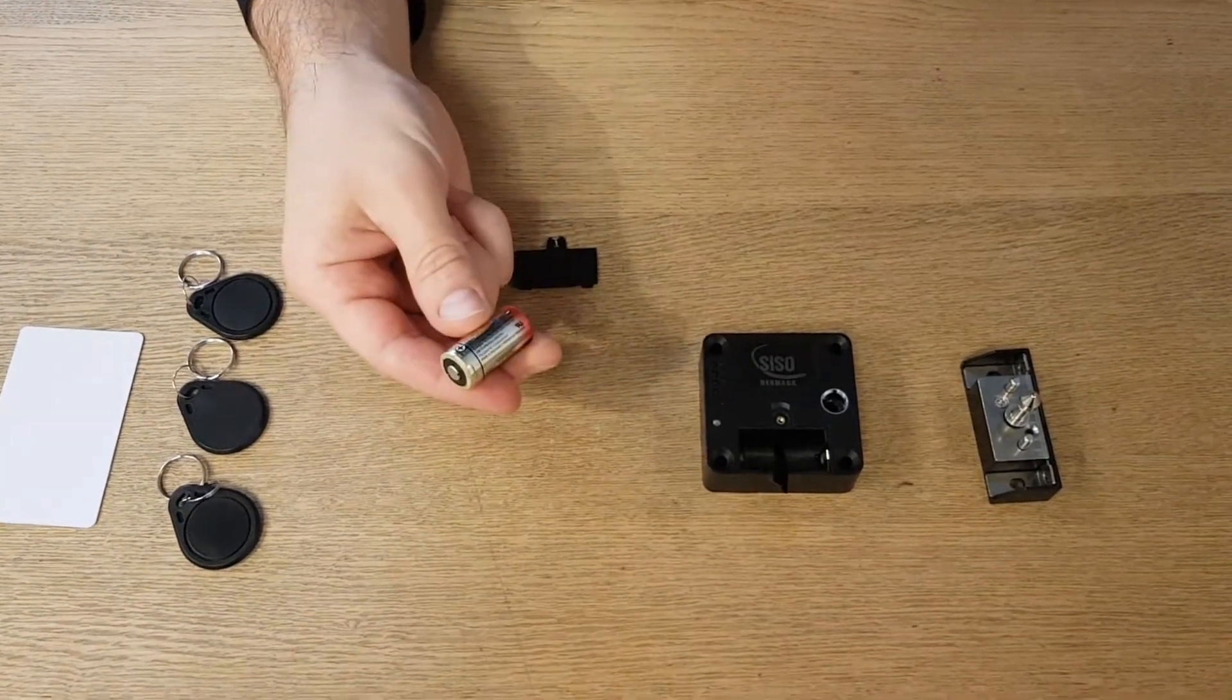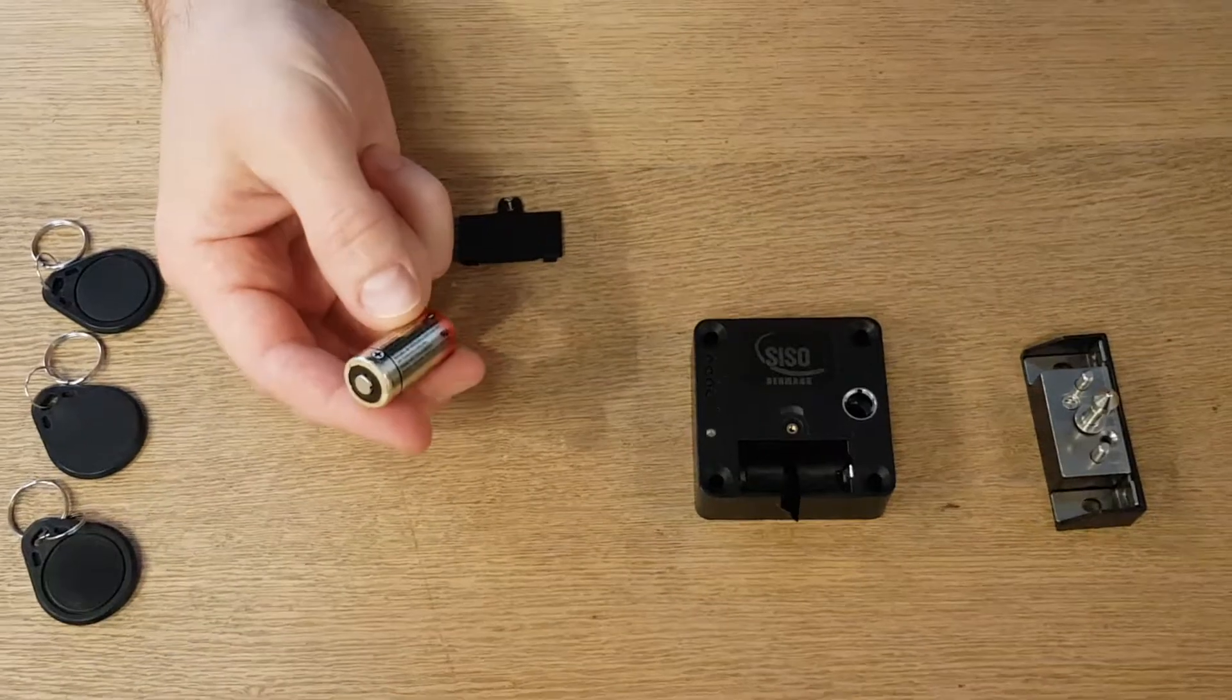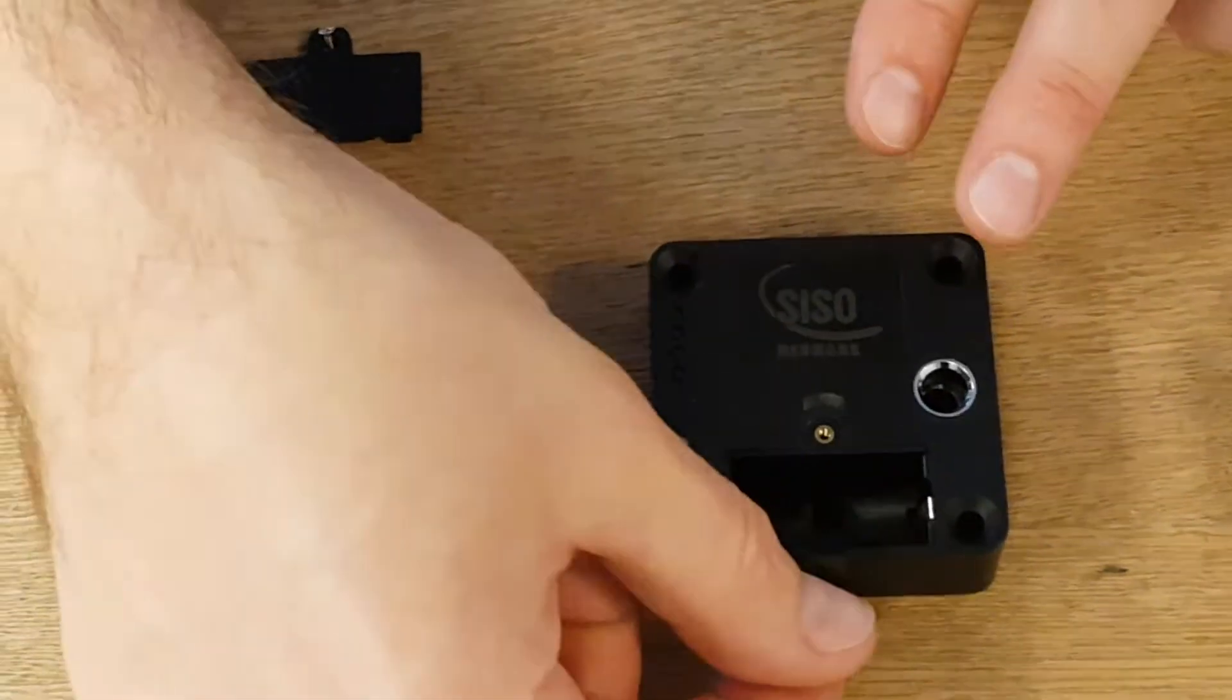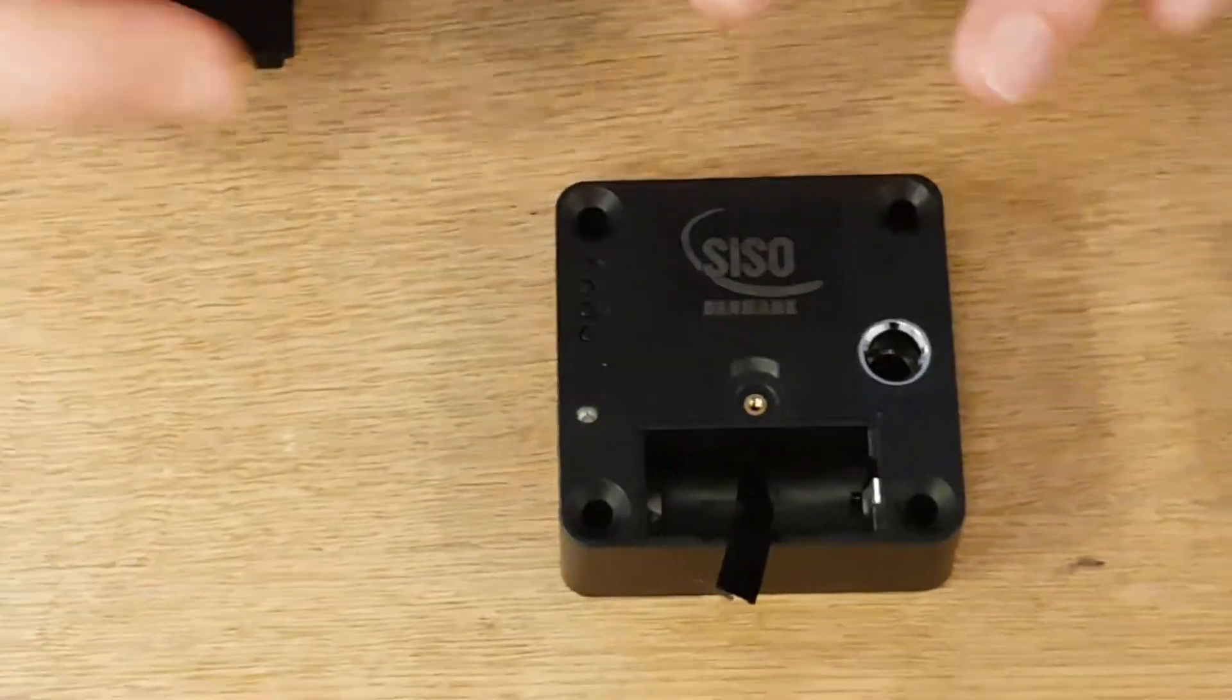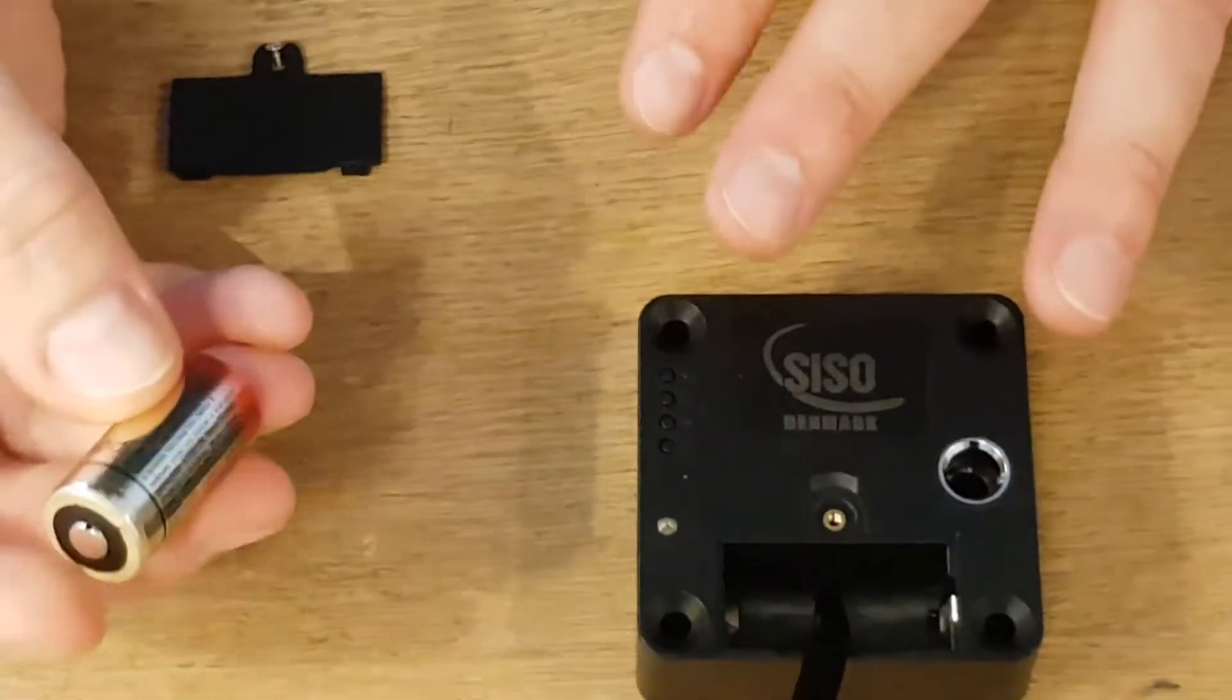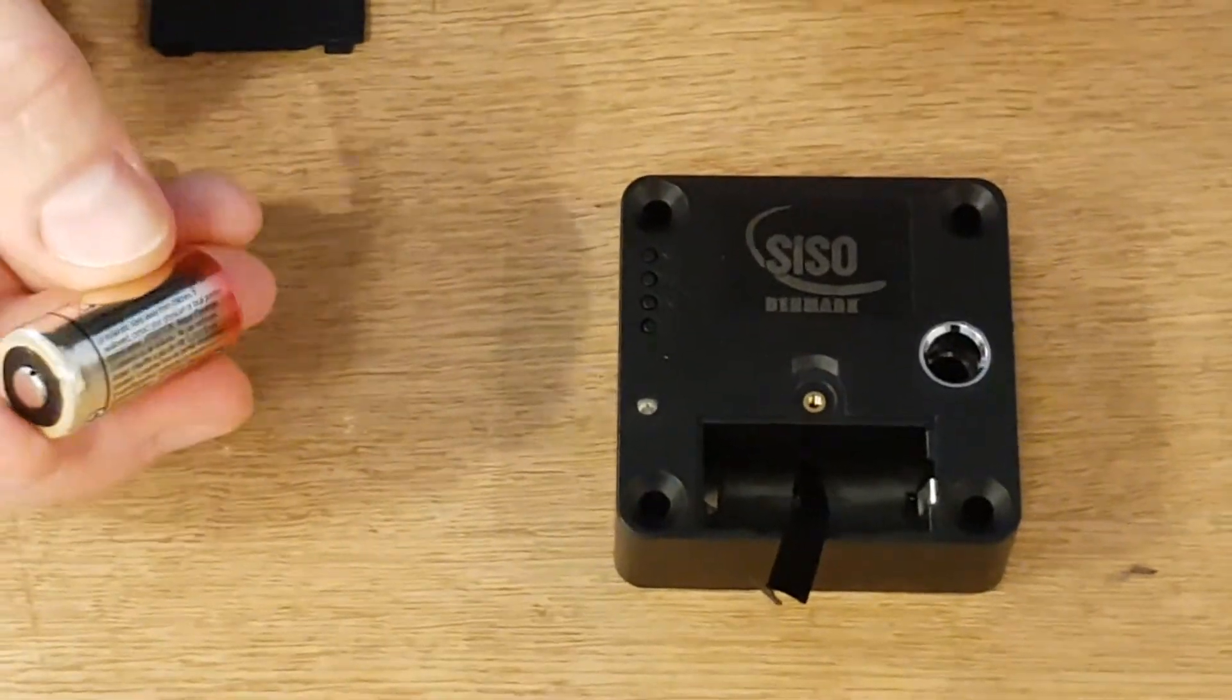You start by taking your lithium battery and putting it inside the lock. As you can see here there's a small strap. Please put it like this because then it's easier to remove or exchange the battery later on.